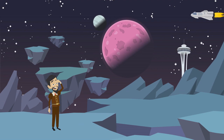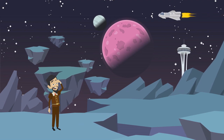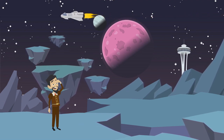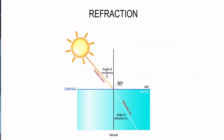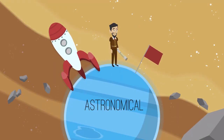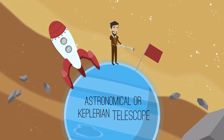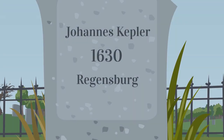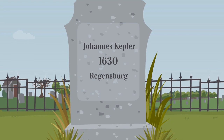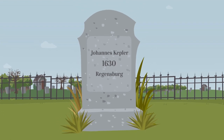In addition to his astronomical contributions, Kepler advanced optics with new theories. He explored light refraction and designed what is now known as the Astronomical or Keplerian Telescope, which had higher magnification than Galileo's. Johannes Kepler passed away in 1630 in Regensburg, today Germany.